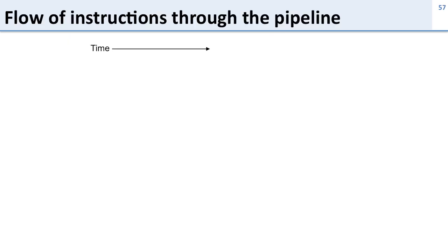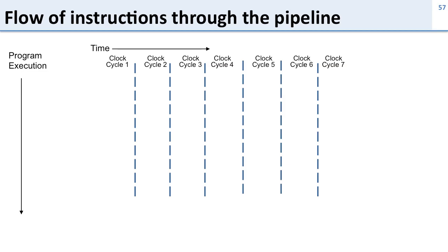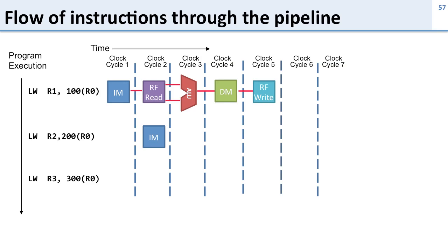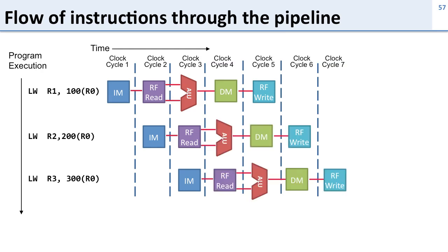Let's take a look at the flow of instructions through the pipeline. On one axis we have time and on the other we have program execution — a bunch of clock cycles and some instructions. Here's a load word instruction: in the first cycle it accesses the instruction memory, in the second cycle it reads from the register file, in clock cycle three it does an ALU op to calculate the address, in clock cycle four it accesses the data memory, and finally in clock cycle five it writes back the results from the memory. Other instructions overlap — at the same time as the first instruction does its decode, the second instruction accesses the instruction memory. When we write them all out we see our full pipeline.